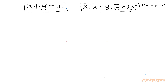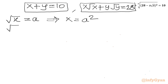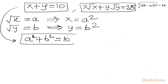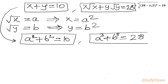Now I will use substitution once again to make our system radical-free. Let √x equal to a, so x equals a², and √y equal to b, so y equals b². Our system becomes a² plus b² equal to 10, and a³ plus b³ equal to 28.